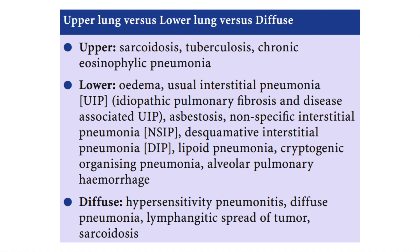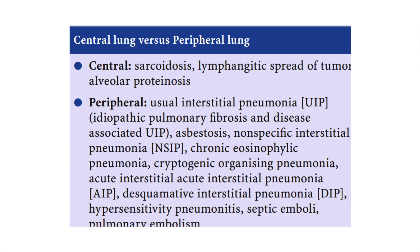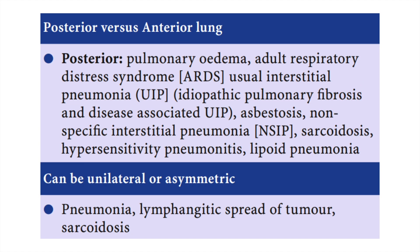Regarding regional distribution: upper lung is mostly affected in sarcoidosis, tuberculosis, and chronic eosinophilic pneumonia. Lower lung is mostly affected in edema, UIP pattern, asbestosis, NSIP, lipoid pneumonia, and cryptogenic organizing pneumonia. A diffuse pattern suggests hypersensitivity pneumonitis. Central lung is predominantly sarcoidosis, lymphangitic spread of tumors, and alveolar proteinosis. Peripheral distribution — similar to subpleural — is mostly UIP pattern. Posterior predominance is most commonly seen with alveolar edema and ARDS, and asbestosis. Unilateral or asymmetrical patterns are most common in pneumonias.